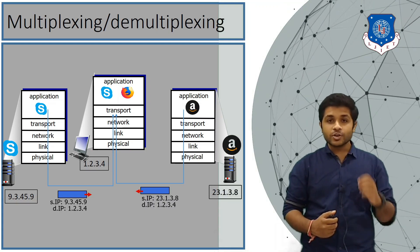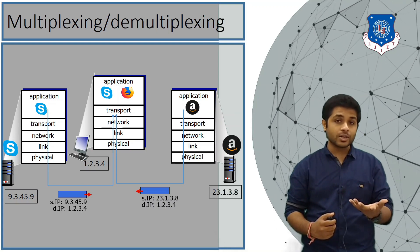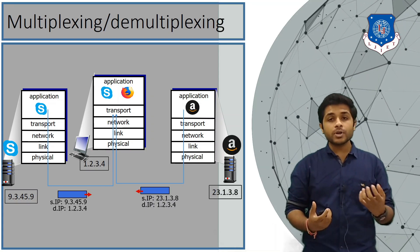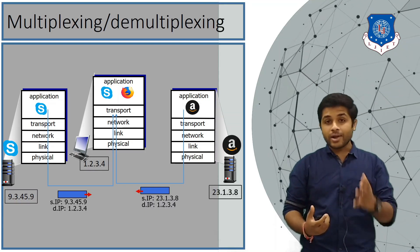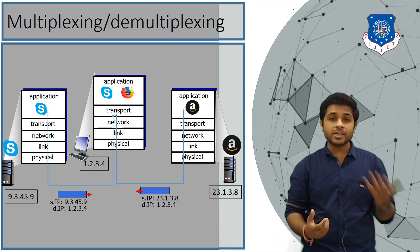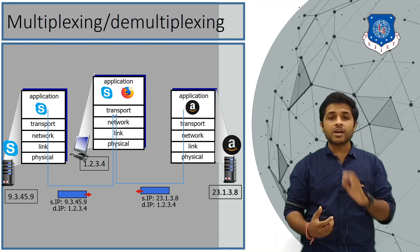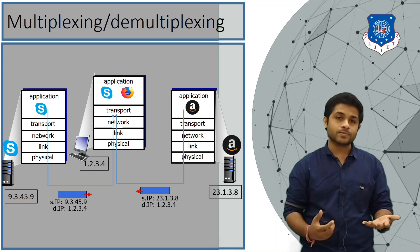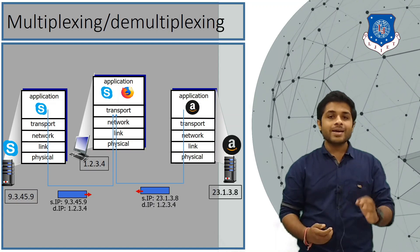When your computer receives both messages at the same time, it gets confused — there are two applications running in the application layer and it doesn't know which data should be delivered to which application. Imagine if 10 or 12 applications are running simultaneously and sending and receiving data at the same time; your computer would not be able to determine which data belongs to which application.